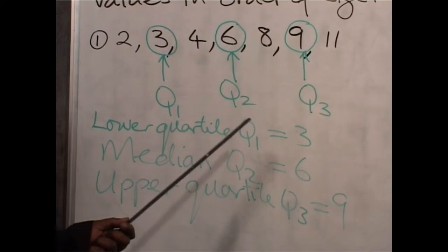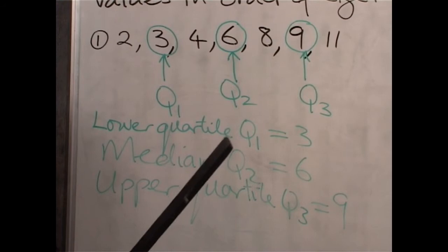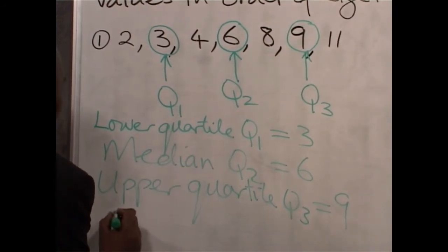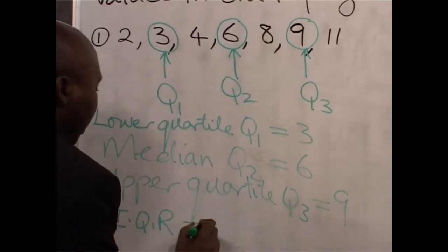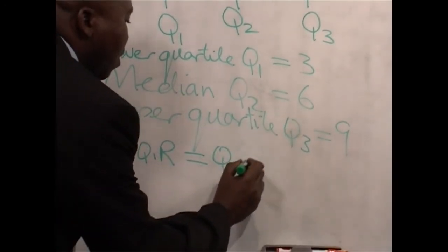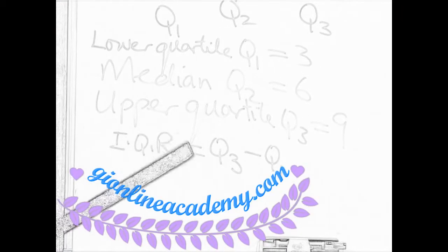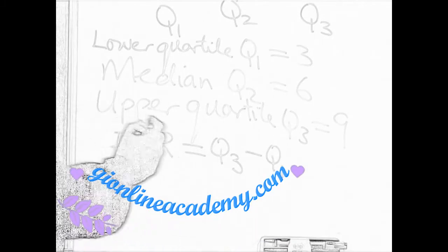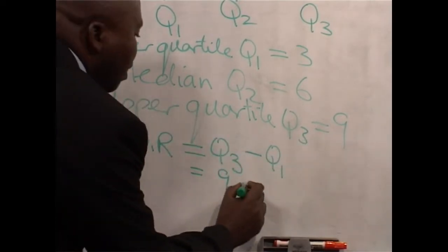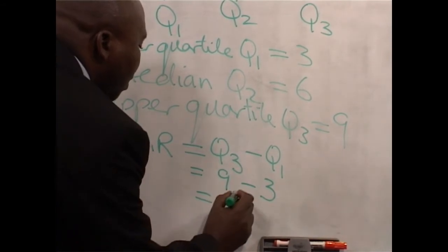Since we have already found Q1, Q2, and Q3, you can calculate the inter-quartile range. Remember the formula? The inter-quartile range, by definition, is the difference between the upper quartile and the lower quartile. So for this set, the inter-quartile range will be Q3 minus Q1, which will give us 9 minus 3, and the inter-quartile range will be 6.